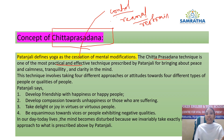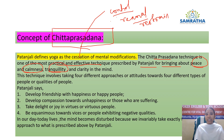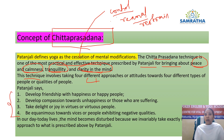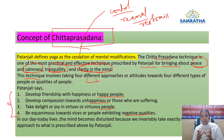This Chitta Prasadhana technique is one of the practical and effective techniques prescribed by the great sage Patanjali Maharshi for bringing about peace, calmness, tranquility, and clarity in the mind. This technique involves taking four different approaches or attitudes towards four different types of people: happy people, unhappy people, virtuous people, and vicious people.